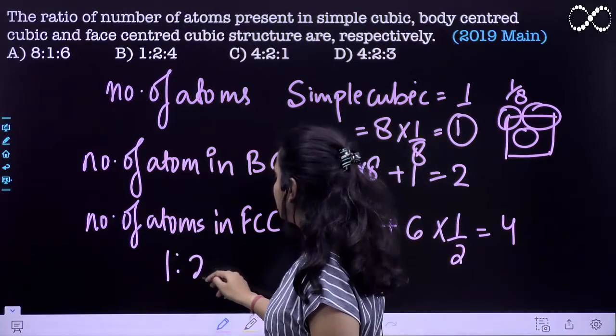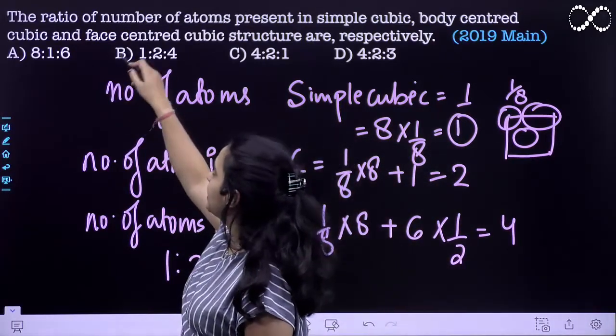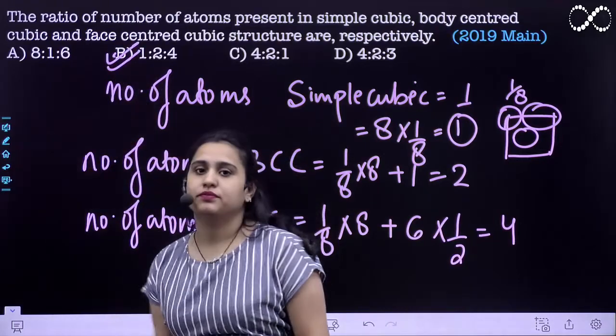So this is 1 is to 2 is to 4, therefore the answer is B. Thank you.